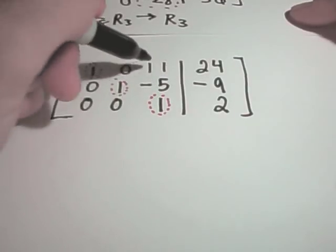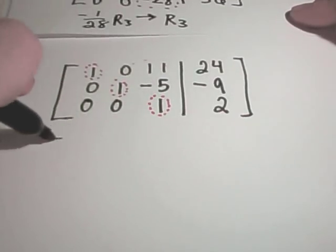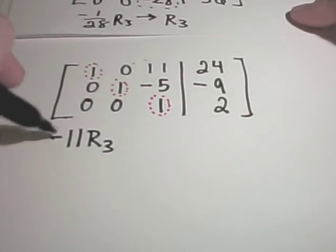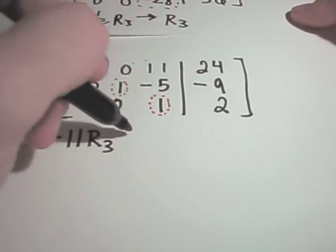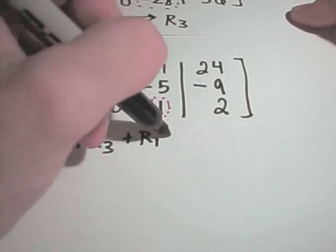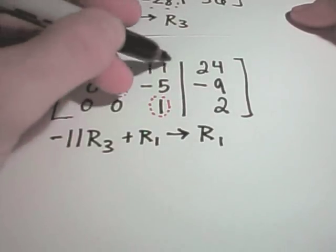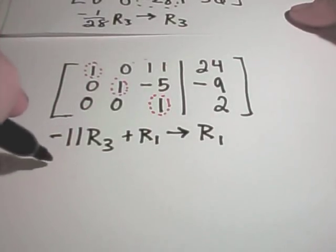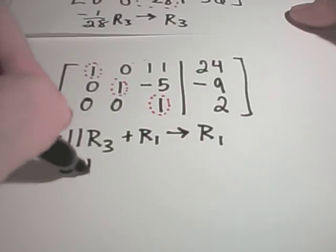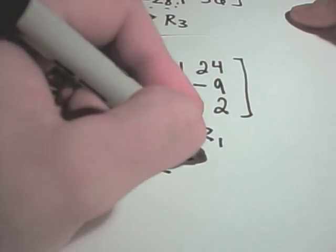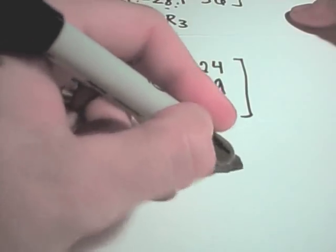Okay, so it looks like to get a 0 in row 1, if I take negative 11 times row 3 and add that to row 1, that should give me my new row 1, and it looks like it should make a 0. It looks like if I just take 5 times row 3 and add that to row 2, that will simply give me my new row 2.